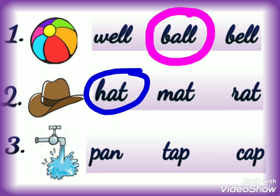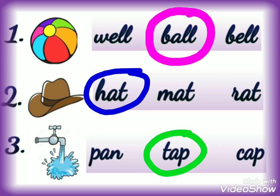Number 3 — this is the picture of tap. We will read all three options one by one. First option is P-E-L-L, pan — this is not the right answer. Second option is T-E-L-L, tap — yes, we have got our right answer, so we will circle this word. The third option is C-A-P, cap — this is not the right answer. So we will move on to the next number.